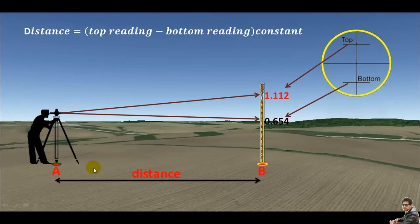Let's do some calculations. The distance equals the top reading, 1.112, minus the bottom reading, 0.654 meters, times the constant. The constant may be different for every type of instrument, but mostly we use 100.